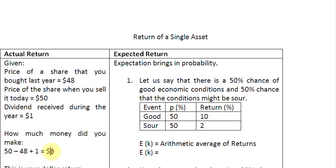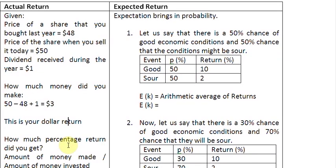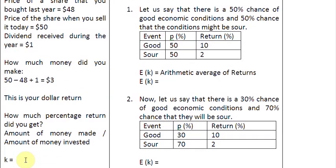We call this amount $3 as your dollar return. But then you also might come across a question where you might have to find out the percentage return. And to find out the percentage return is also pretty simple. Percentage return is simply equal to the amount of money you make, this one here, divided by the amount of money you invested. So let us do that quickly here.